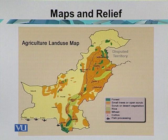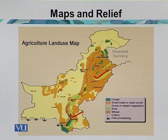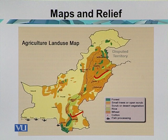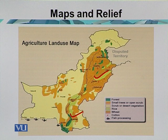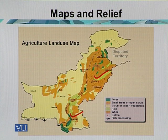The upper part of the Indus Plain is the Punjab province, and the lower part is the Sindh province. Both provinces are important for agricultural production of the country. During summer season, rice, sugarcane, and cotton are the major crops, mostly coming from these two provinces. During the winter season, the major crop is wheat, with most production coming from Punjab or the upper Indus Plain.